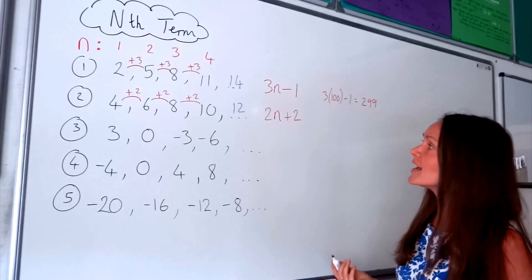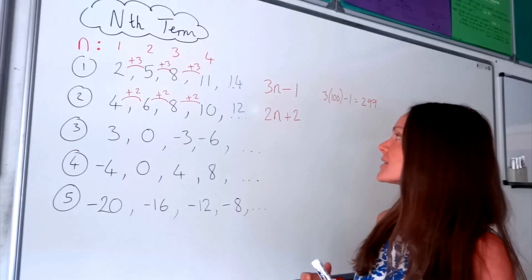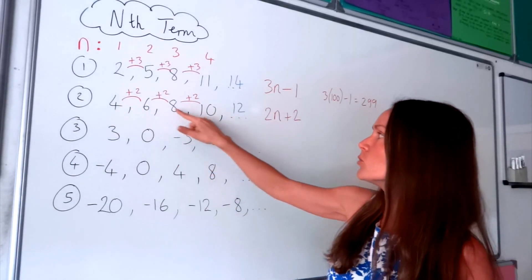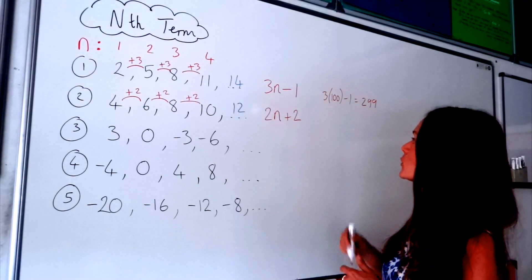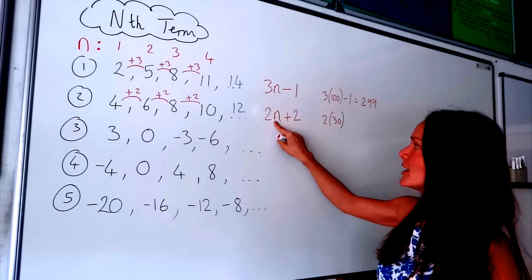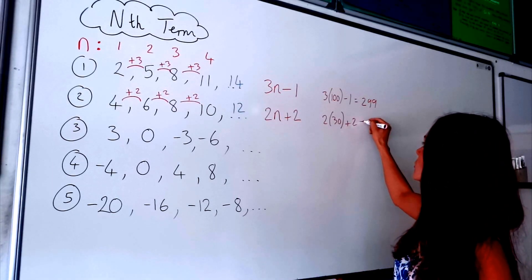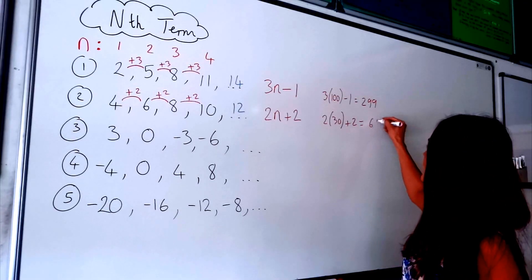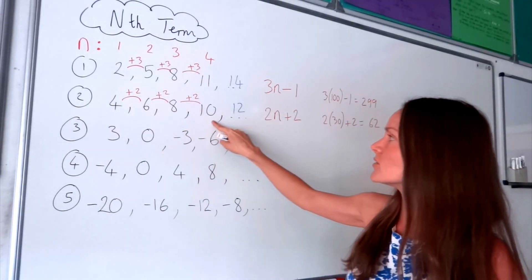If I wanted to find the 30th number in this sequence, instead of writing them all out, I can use this formula. I do 2 multiplied by 30, because n is 30 — it's position 30 — and then I add 2. Well, 2 times 30 is 60, and if I add 2, it gives me 62. So 62 is the 30th number in this sequence.